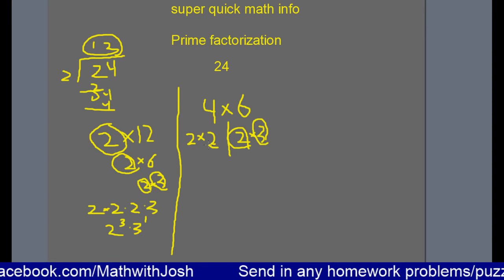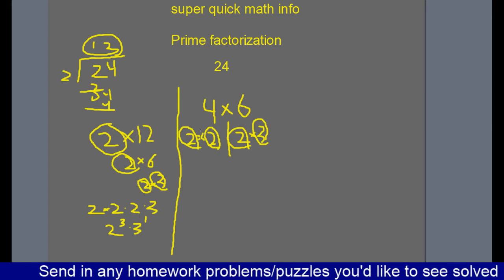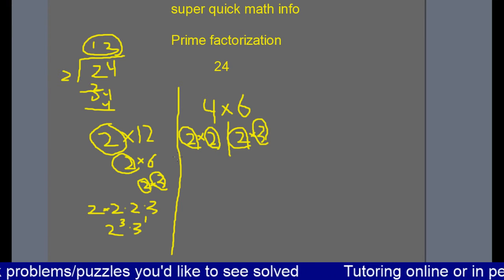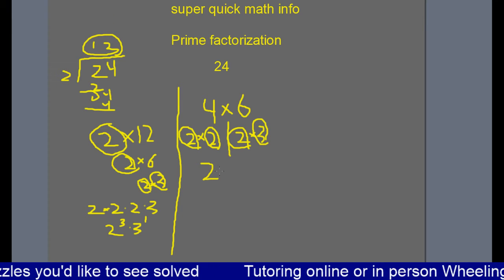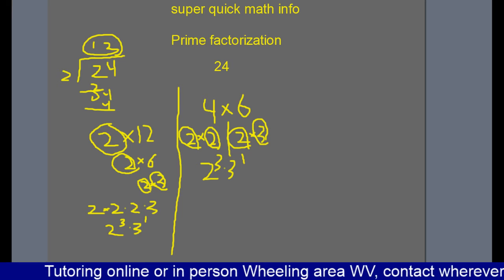These are all prime, so I'm going to draw some circles around them. And we'll notice, no matter what order you go in—this is not a proof, but this is true—no matter what order you go in, you get the same ultimate answer, in this case 2 to the third times 3 to the first.